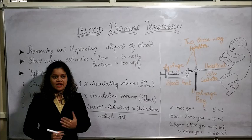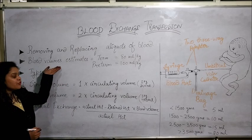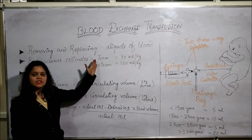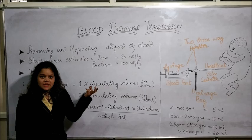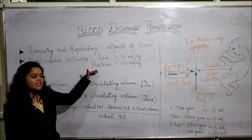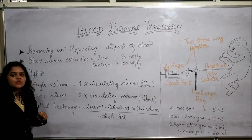How much blood can be exchanged in a neonate or infant? There are blood volume estimates for this. In case of a term infant, we can give 80 ml per kg — so the weight of the baby determines the volume to be exchanged. In case of a preterm infant, we take the volume as 100 ml per kg.